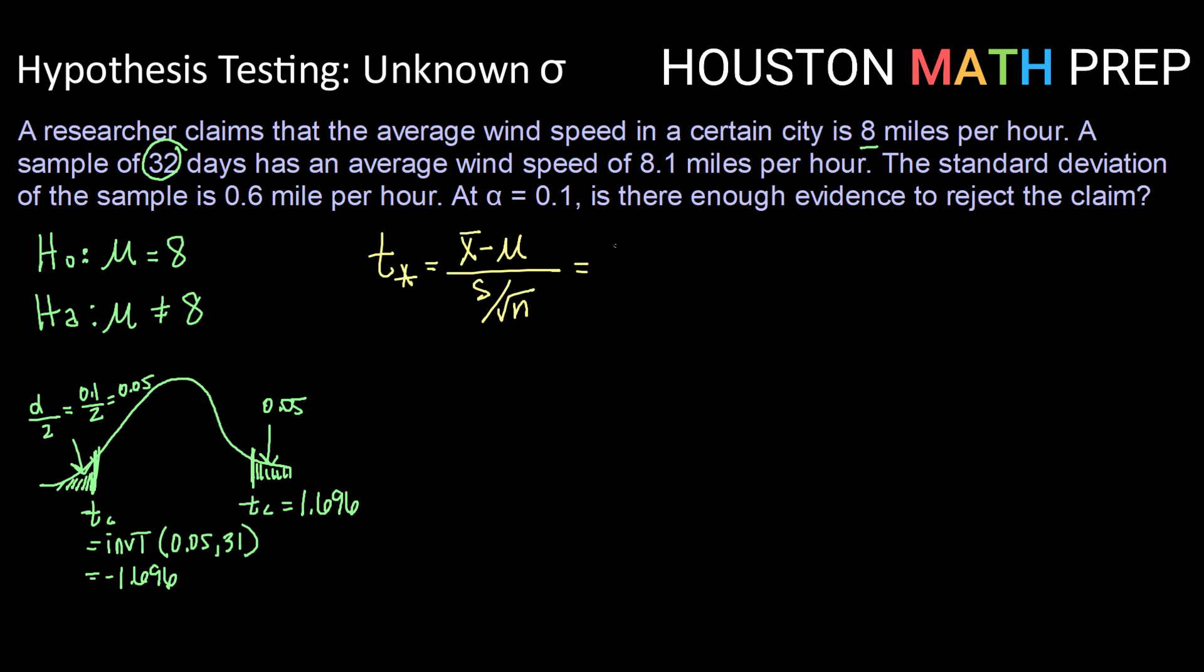Alright, so our x-bar was 8.1 minus our mu of 8 divided by our s of 0.6, dividing by the square root of the number in our sample, which is 32. So calculating there, we get a t-value of 0.943. So 0.943 would fall somewhere over here, which is not in the rejection region.